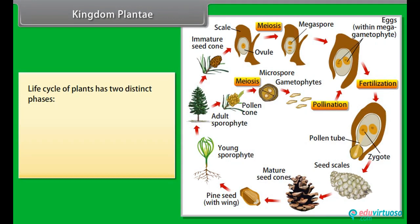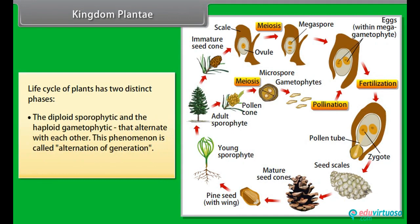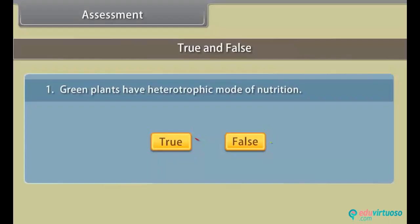The life cycle of plants has two distinct phases: the diploid sporophytic and haploid gametophytic, that alternate with each other. This phenomenon is called alternation of generation.